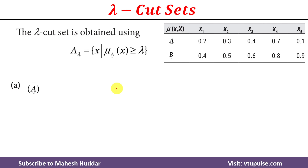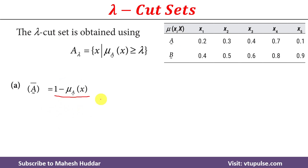In this case we want to calculate the lambda cut of the inverse of fuzzy set A. We know fuzzy set A, but we do not know what the inverse of fuzzy set A is. So first we need to calculate it. To calculate the inverse of fuzzy set A, we use the formula: inverse of A is equivalent to 1 minus the membership value of x in fuzzy set A.